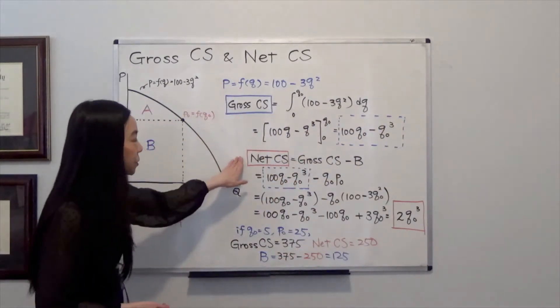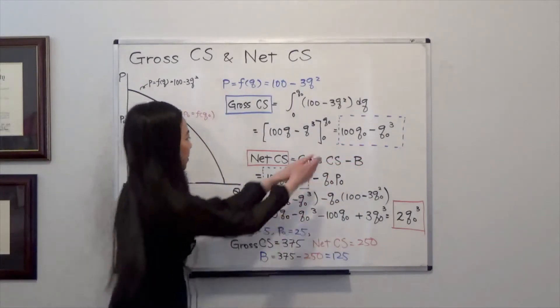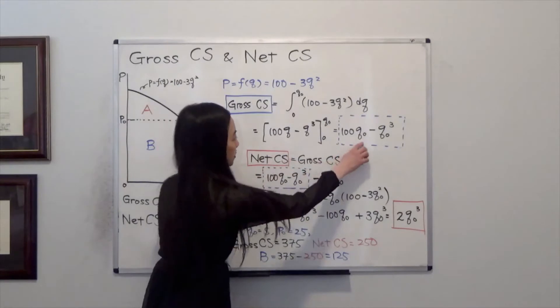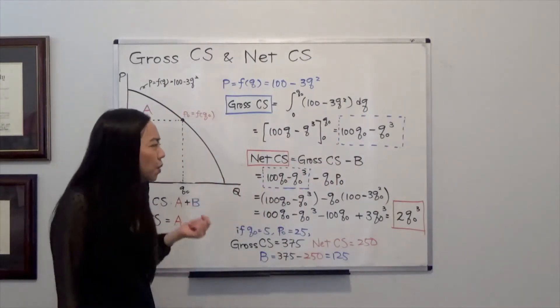Now net consumer surplus is just gross consumer surplus minus area B. So our gross consumer surplus is there, 100Q0 minus Q0 cubed. And what is B?